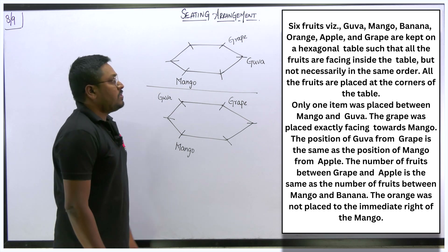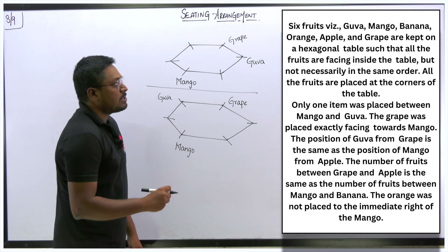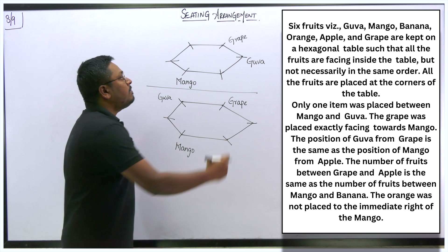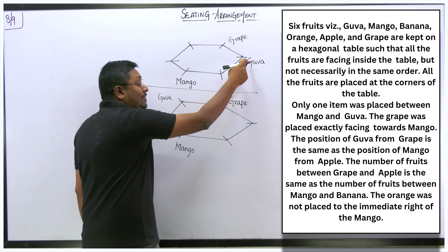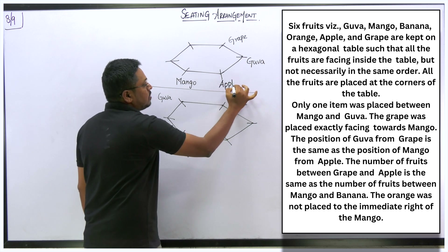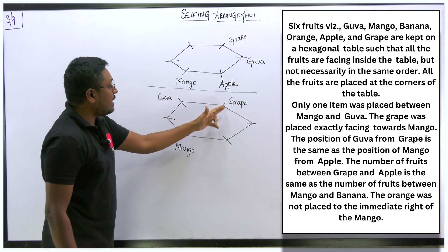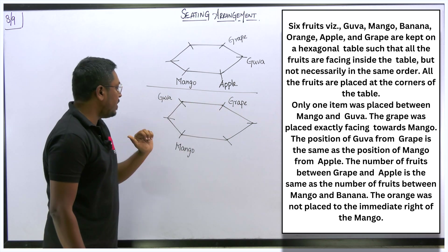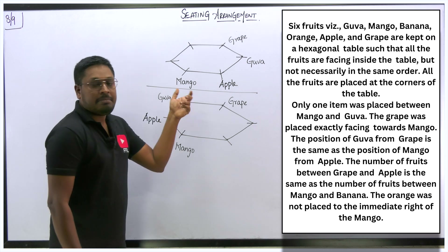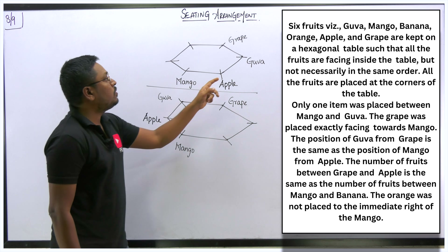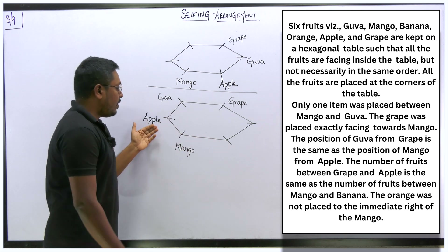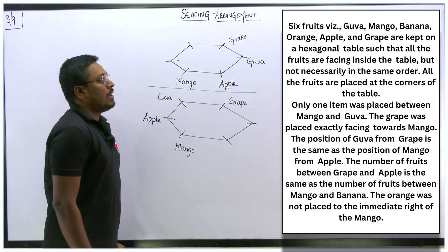Next point: the position of guava from grape is the same as the position of mango from apple. From grape, guava is on the left-hand side — so in the diagram, mango should be on apple's left-hand side. Or from grape, guava is on the right-hand side — so apple's right-hand side should be mango. The same relative position from grape to guava must be replicated from apple to mango.